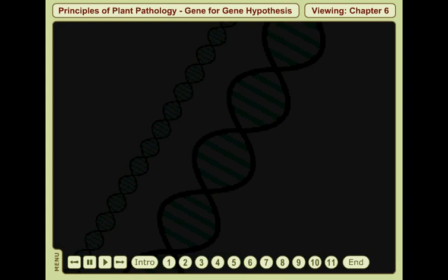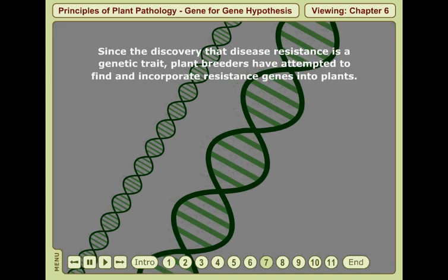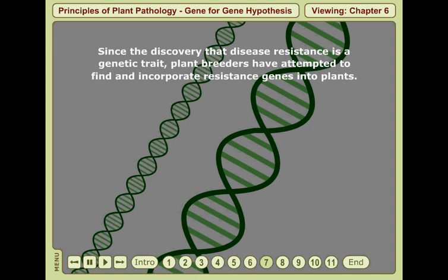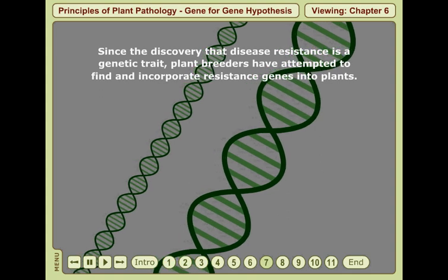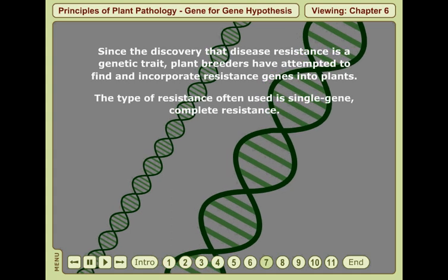Since the discovery that disease resistance is a genetic trait, plant breeders have attempted to find and incorporate resistance genes into plants. The type of resistance often used is single gene complete resistance.